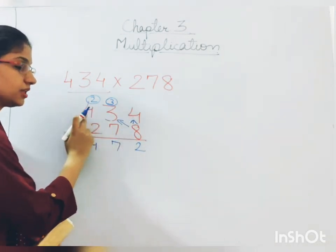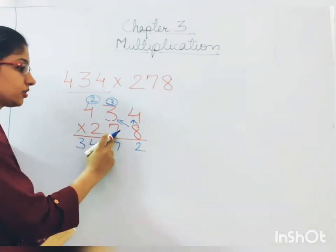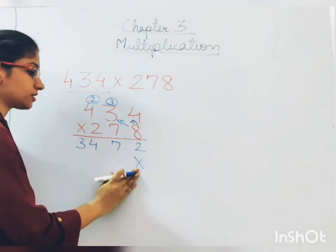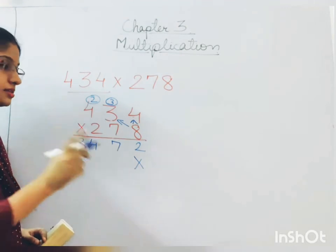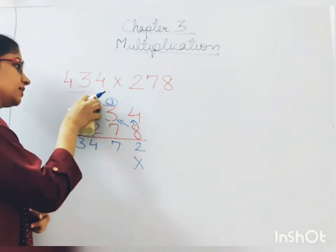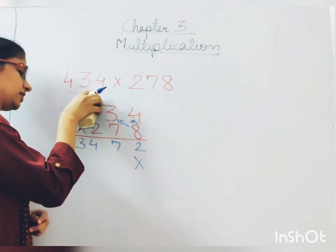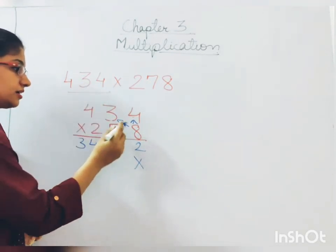Now we have done multiplication with 8. Now we are going to do multiplication with 7. So put a cross here. When you start with the next number, first thing put a cross here. Secondly, erase it. Erase the previous carryovers. Just erase them. Now let's start again.